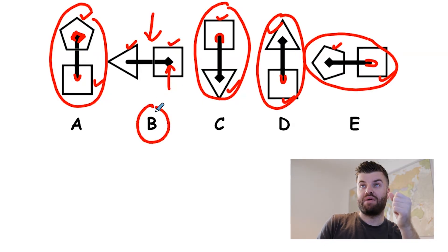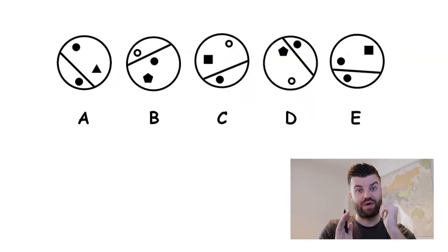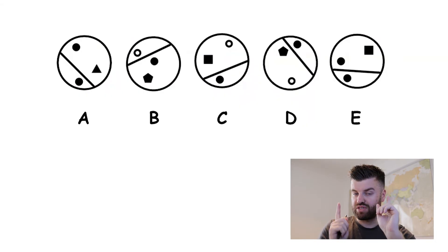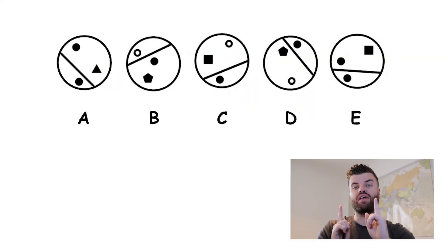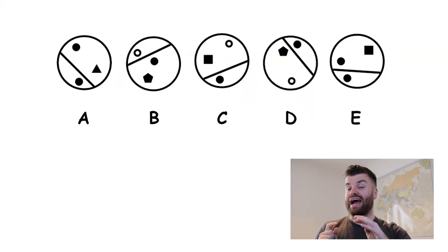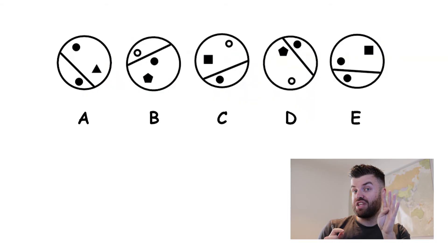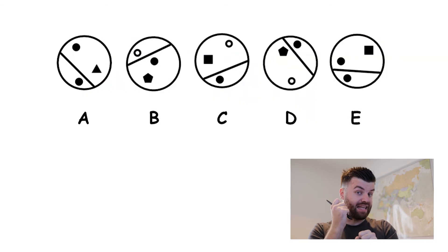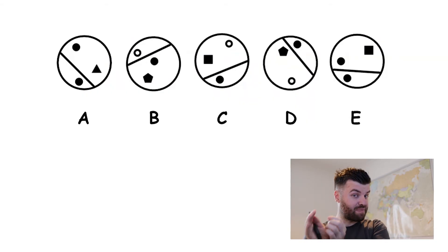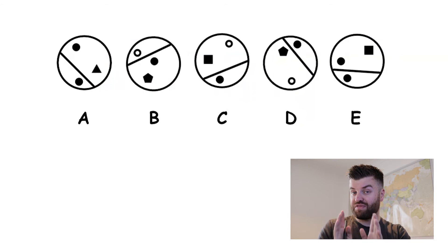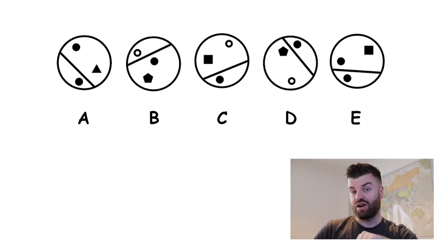We circle B and move on. Here we have a third odd one out question, and I want you to have a go yourself. Remember, you are looking for the odd one out — you need to be able to justify how the other four are the same and your shape is the only one that's different. Please pause the video and have a go for yourself. Leave a comment below if you've got an answer, and we'll go through it together in a minute.